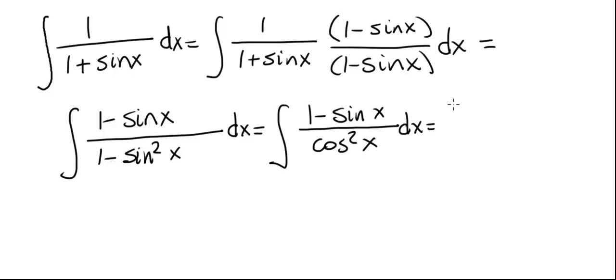And now we'll break this up into two integrals. First one, 1 divided by cosine squared x minus the second, which is sine x divided by cosine squared x.